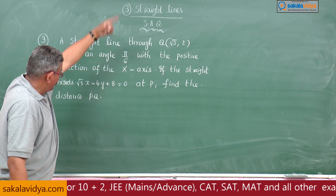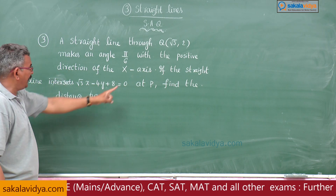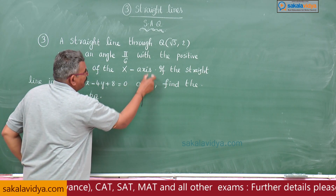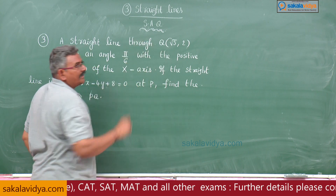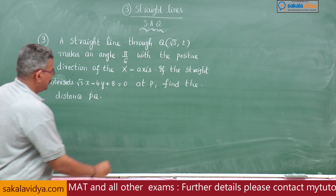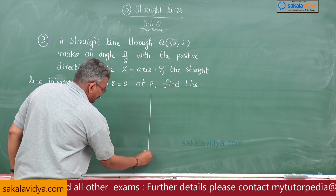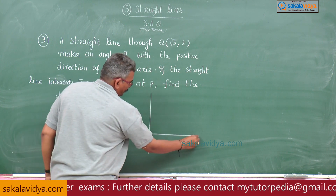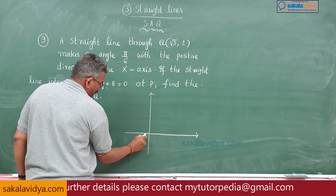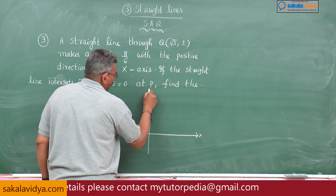If that same straight line intersects this line at P, then the distance between point P and point Q we have to find out. So, for example, you take like this: the coordinate axis, origin, x-axis and y-axis.